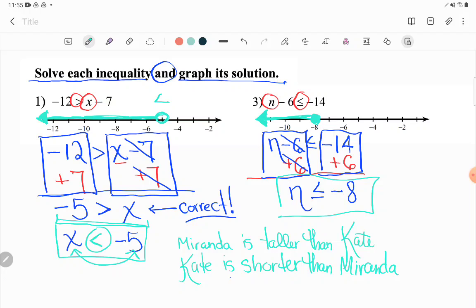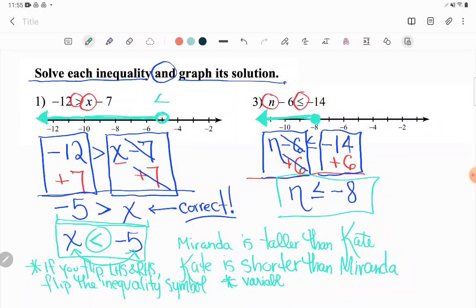All right. So if you flip, this is the main thing we need to walk away with from this video. If you flip the left and right hand side, flip the inequality symbol. Wow. I don't think I'll be making many more videos today, guys. It's hard to breathe. Okay. And then another thing to walk away with is it's not wrong if the letter's on the right hand side, but having your variable on the left hand side makes something easier to graph and easier to understand. So it makes the solutions to inequalities easier to understand and easier to graph.